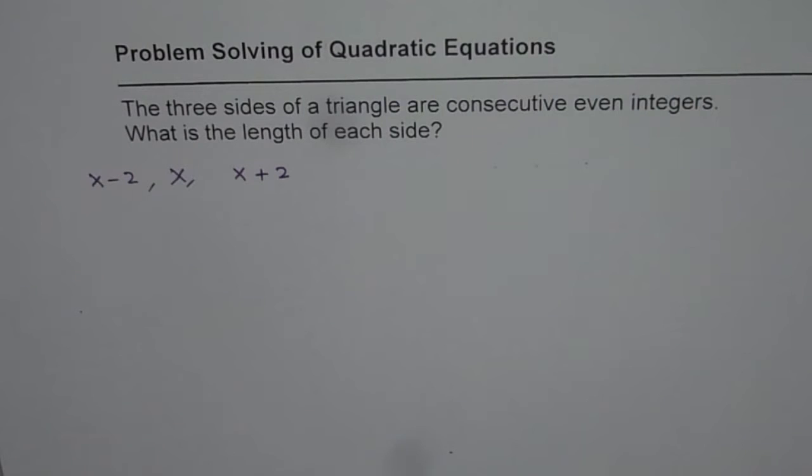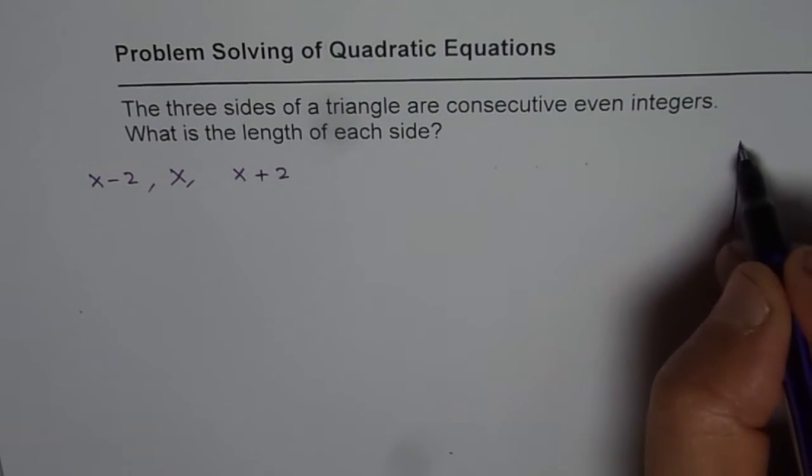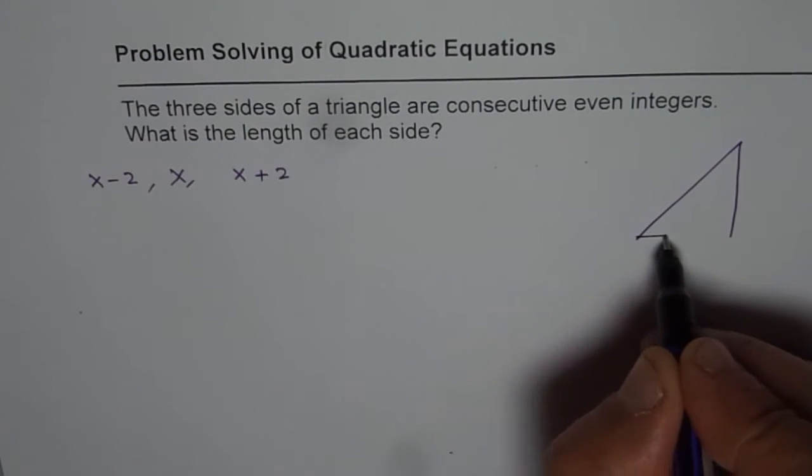Since we do not really have any other correlation, we will assume it could be any triangle. We will assume for the time being that this is a right triangle.